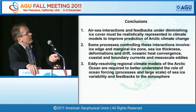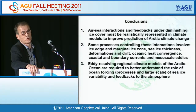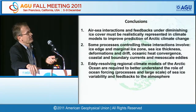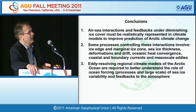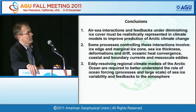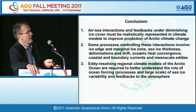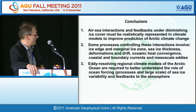In summary, air-sea interaction feedbacks under diminishing ice cover need to be realistically represented in climate models to improve predictions of climate change. Important processes include the ice edge and marginal ice zone, sea ice thickness, deformation and drift, oceanic heat convergence, coastal boundary currents, and mesoscale eddies. We argue that to obtain these improvements we need to move into eddy-resolving regional climate models that allow proper representation of oceanic and sea ice conditions and the feedbacks important for addressing future Arctic climate change.